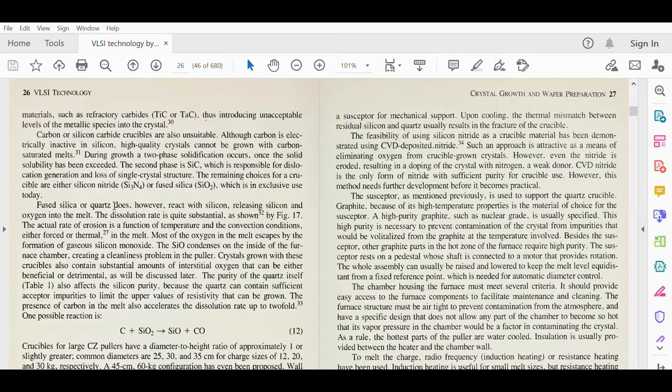Fused silica or quartz reacts with silicon, releasing silicon and oxygen into the melt. The dissolution rate is quite substantial, as shown in figure 17. The actual rate of erosion is a function of temperature and convection conditions. Most oxygen in the melt escapes by formation of gaseous silicon monoxide. The SiO condenses inside the furnace chamber, creating a cleanliness problem, but that can be treated.